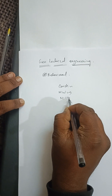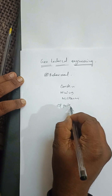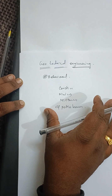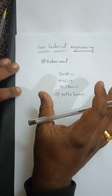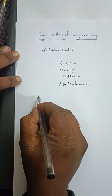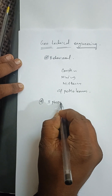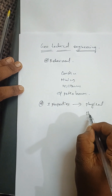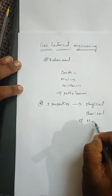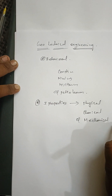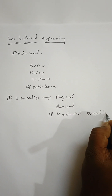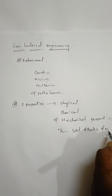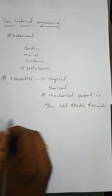military projects and also petroleum mining. These are the main places where geotechnical engineering is used. It mainly deals with soils, rocks, and minerals. The three main properties that geotechnical engineering deals with are the physical, chemical, and mechanical properties of soil, rocks, and minerals.